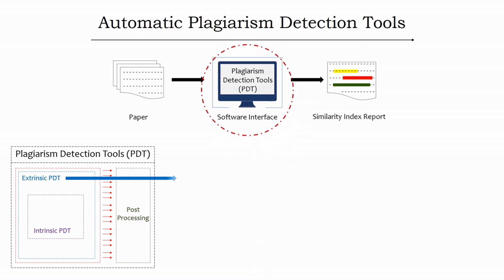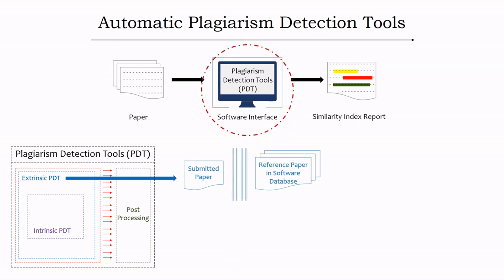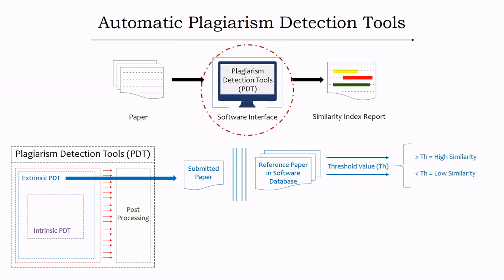In the first stage, external plagiarism detection compares the submitted document with a reference collection in the software database. Reference documents include papers, theses, web posts, web links, etc., and some are algorithmically modeled by the software. This comparison yields a threshold value — above which the document has high similarity, and below which it has low similarity. Fingerprinting is largely followed in this stage.